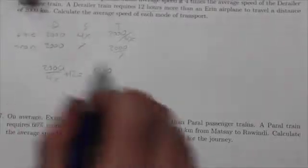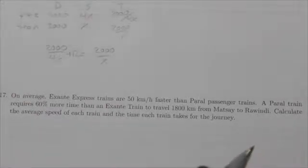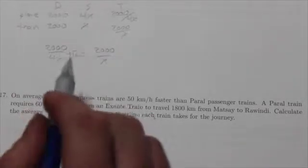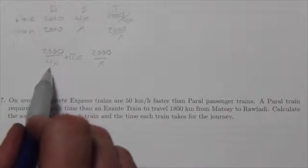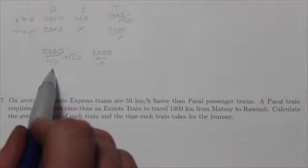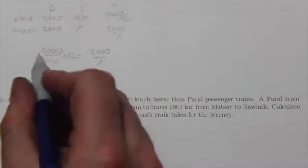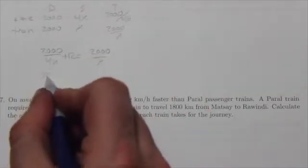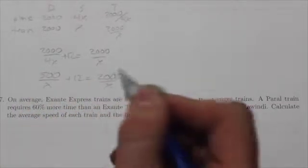This equation, once I've got the time added to the right spot, is actually easier to solve than a lot of them. When you've got 2,000 divided by 4x, I can simplify that down right away. 2,000 divided by 4 is 500 over x plus 12 equals 2,000 over x.